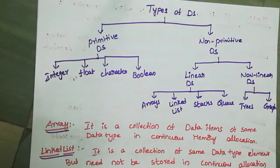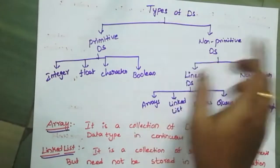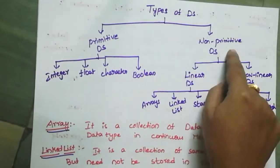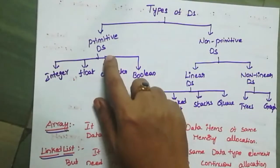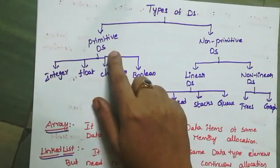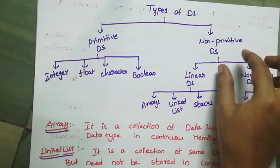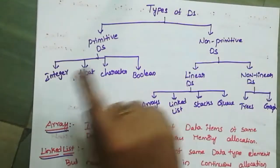Hi students. Next class: Types of Data Structures. We have two types of data structures. The first type is Primitive Data Structures. The second type is Non-Primitive Data Structures.